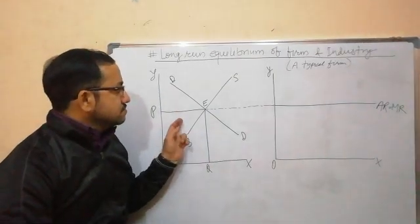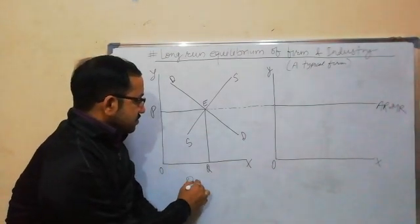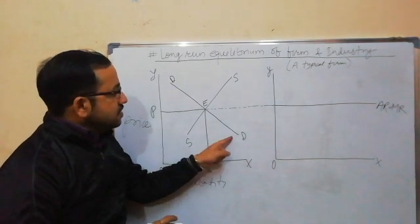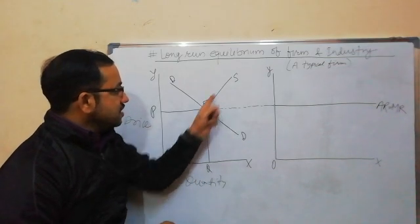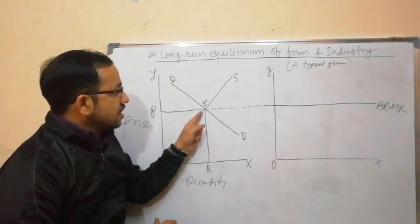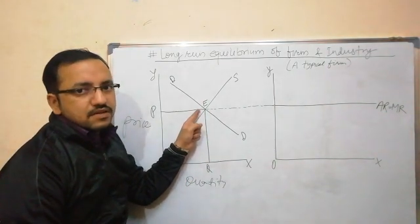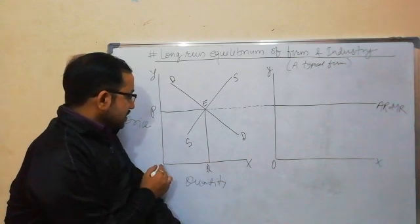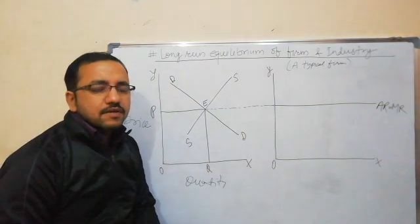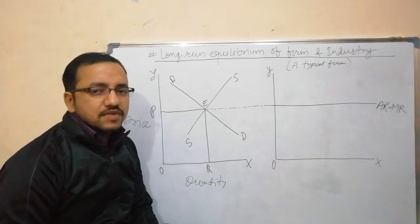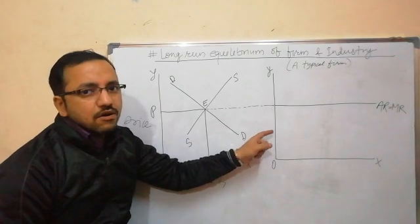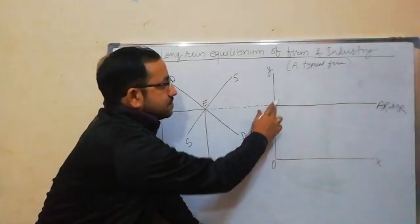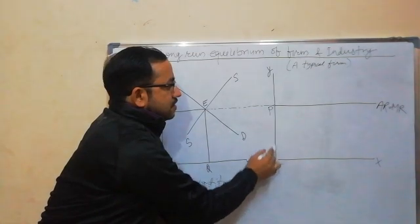In the first diagram, the x-axis shows quantity of output and the y-axis shows price. Here, DD is the demand curve and SS is the supply curve, which intersect each other at point E. Therefore, E is the equilibrium point of the industry, where the equilibrium quantity is OQ and the equilibrium price is OP. This equilibrium price is determined by the industry and accepted by all firms in the industry.